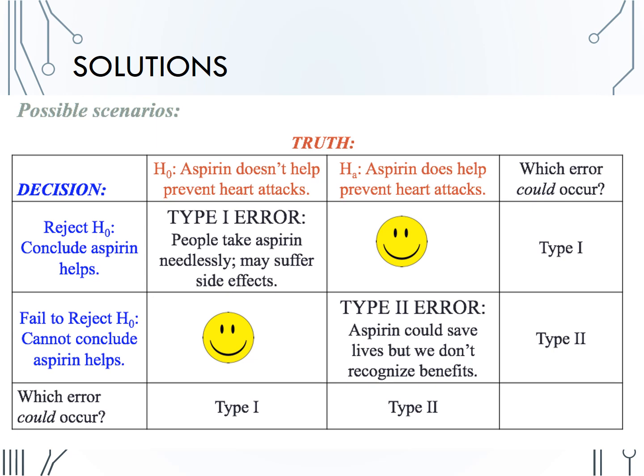Notice the additional column and row at the end of the table. Errors are conditional on our decisions as well as the truth. So when we reject the null, the only error that could have occurred is type 1. When we fail to reject the null, the only error that could have occurred is type 2. Similarly, if we were to know the truth — that the null is true and that aspirin doesn't help prevent heart attacks — then only a type 1 error is possible. Versus if the alternative is true and aspirin does help prevent heart attacks, the only potential error is type 2.